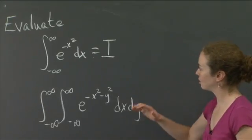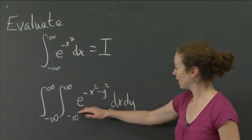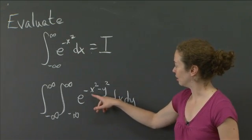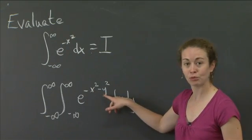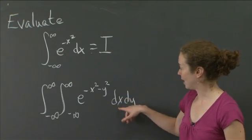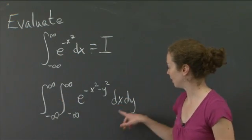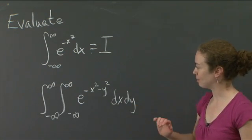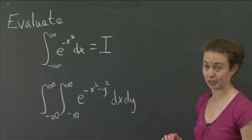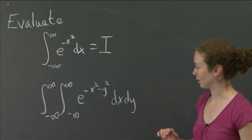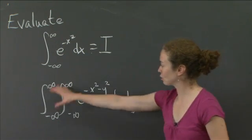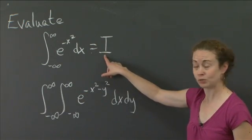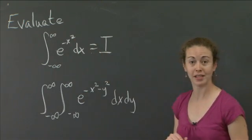I just took this integral, and what I've done is I've now multiplied by e to the minus y squared, and I'm now integrating from minus infinity to infinity in dy also. What I want to point out — maybe not immediately obvious from the way it's written — is that this quantity is actually just the square of the original integral. It's actually just two of these multiplied together.